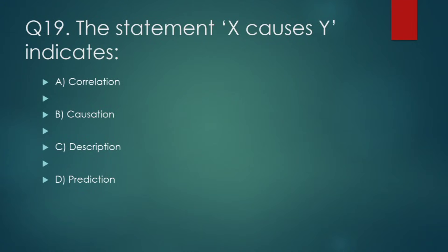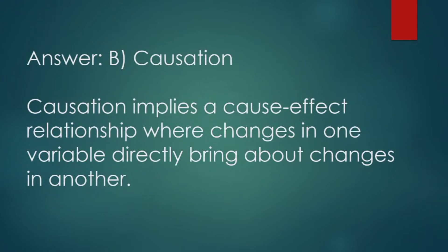The statement 'X causes Y' indicates: (A) Correlation, (B) Causation, (C) Description, (D) Prediction. Correct answer: Causation. Causation implies a cause-effect relationship where changes in one variable directly bring about changes in another.